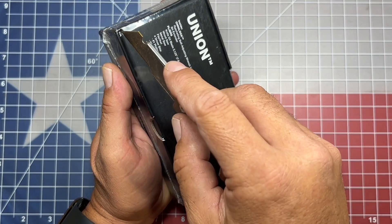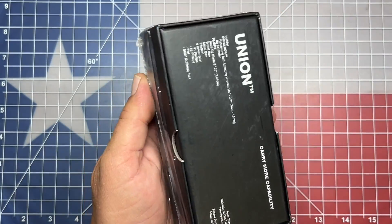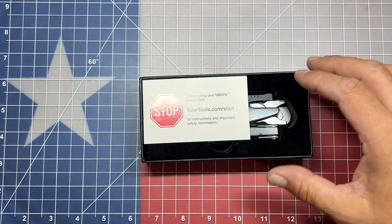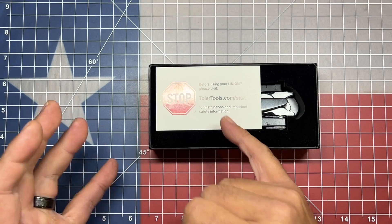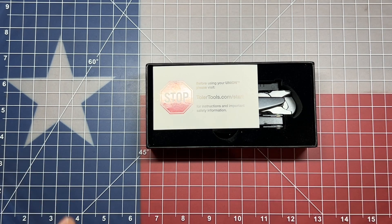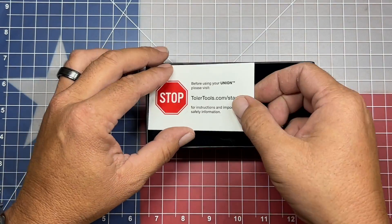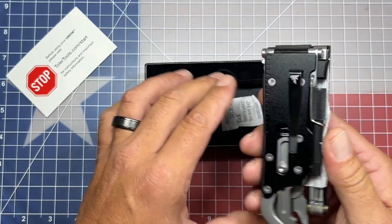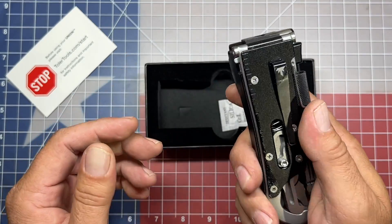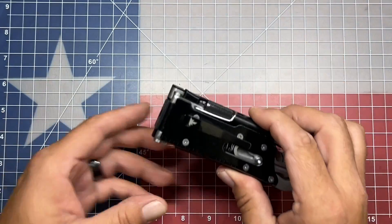So we'll get through here first and set this to the side. And here we go. This is called the Union. Before using your Union, please visit TolerTools.com/start for instructions and important safety information. Right now we're just going to do a first look at this. I imagine this multi-tool is a little involved, so I'm probably going to need a few days with this to really get the ins and outs of this particular multi-tool. But I wanted to show you guys what this thing is all about to start with. I could tell you right off the start that this thing is pretty hefty.